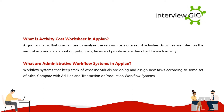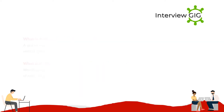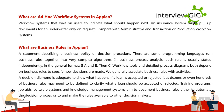What are administrative workflow systems in Appian? These are workflow systems that keep track of what individuals are doing and assign new tasks according to some set of rules. What are ad hoc workflow systems in Appian? These are workflow systems that wait on users to indicate what should happen next. For example, an insurance system might pull up documents for an underwriter only on request.